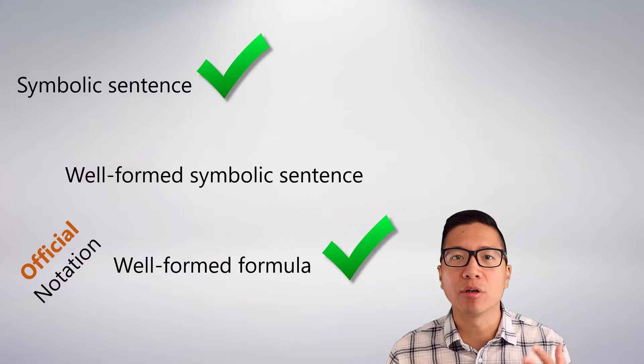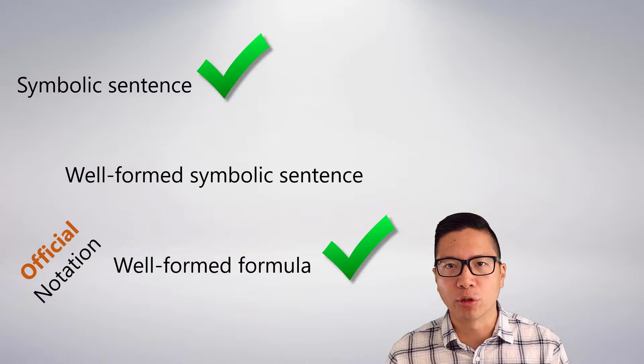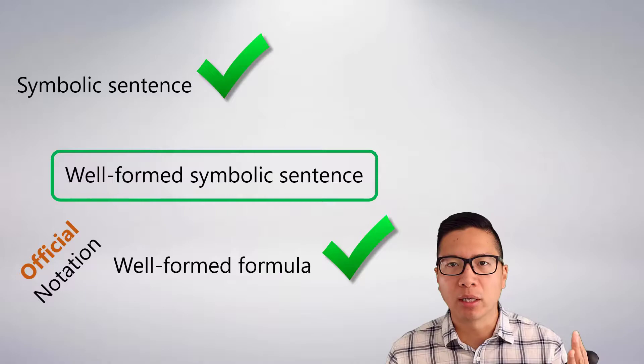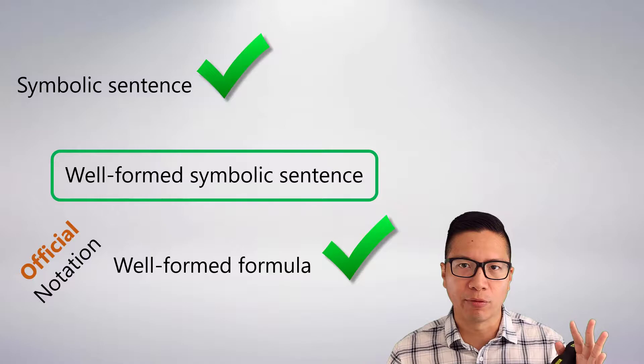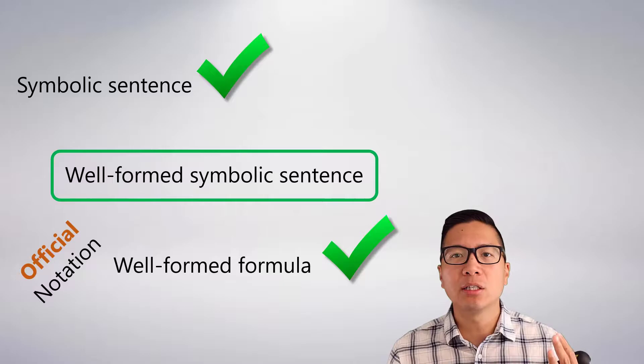But it's not the case that everything needs to be in official notation. What we're going to learn in this video is a way to just generate a well-formed symbolic sentence. So this isn't a well-formed formula, which is the most precise official version — this is a more informal and relaxed style of notation that is still perfectly meaningful but a little easier to write.